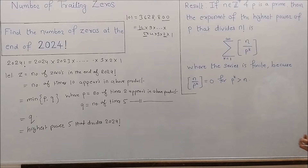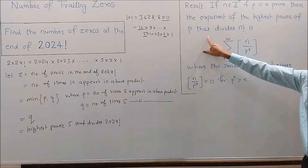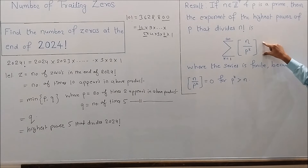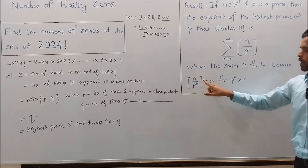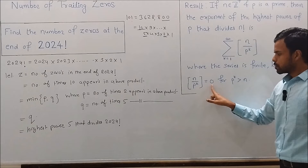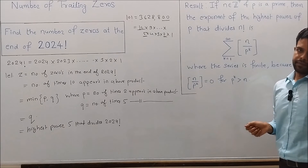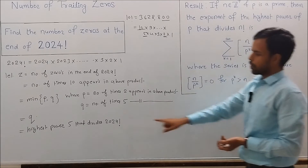This result states that if n is a positive integer and p is a prime, then the exponent of the highest power of p that divides n factorial is given by the sum: ∑ floor(n / p^k) for k from 1 to infinity. The series is finite because floor(n / p^k) = 0 once p^k exceeds n.